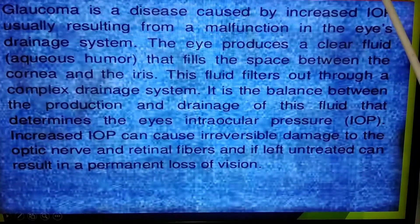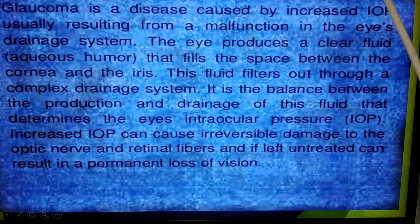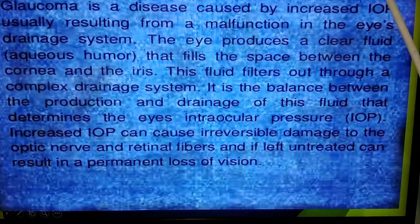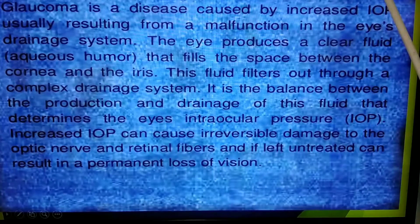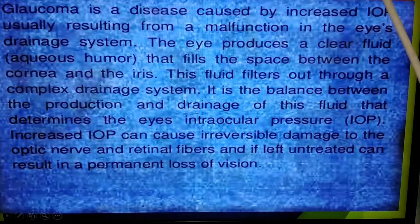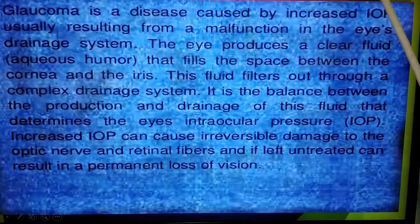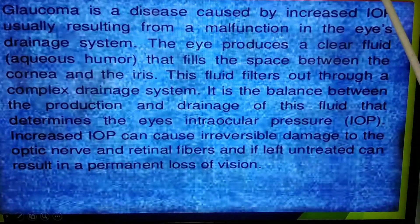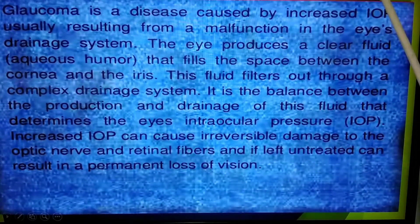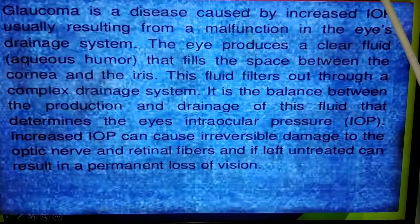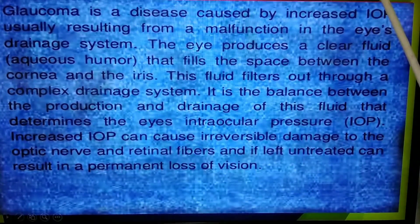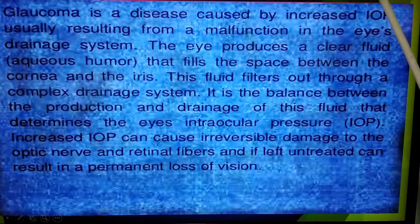Glaucoma is a disease caused by increased intraocular pressure (IOP), usually resulting from a malfunction in the eye's drainage system. The eye produces a clear fluid called aqueous humor that fills the space between the cornea and the iris, and this fluid filters out through a complex drainage system. It is the balance between the production and drainage of this fluid that determines the eye's IOP. Increased IOP can cause irreversible damage to the optic nerve and retinal fibers, and if left untreated can result in a permanent loss of vision.